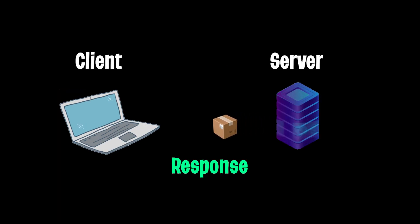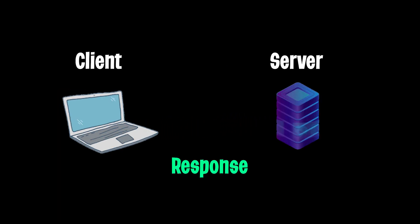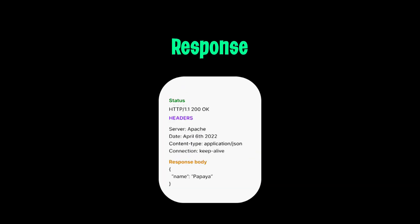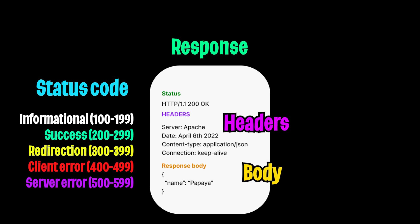Once the server has the data ready, it will send a response back to the client. The response will have a status code, where 200 just means success. Next, we have the header, which contains details about the server. And last, we have the body, which contains the data that we have requested for.